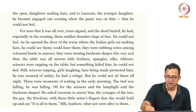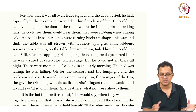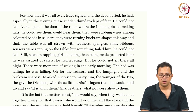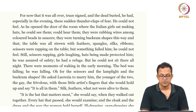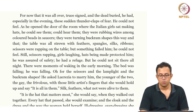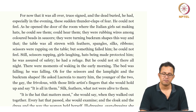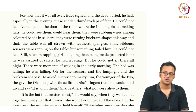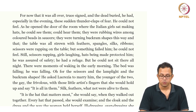Still, scissors rapping, girls laughing, hats being made, protected him — he was assured of safety, he had a refuge — but still he could not sit there all night. There were moments of waking in the early morning; the bed was falling, he was falling. He asked Lucrezia to marry him — the younger of the two, the gay, the frivolous, with those little artist's fingers. So obviously the tragedy of Lucrezia gets accentuated here: she ends up married to a man who, out of panic, proposes marriage because he feels he is running out of feelings. Marriage to Lucrezia is an experiment for Septimus, and she becomes a sufferer, a victim of this male post-war experiment.